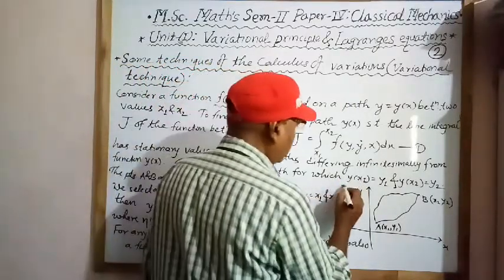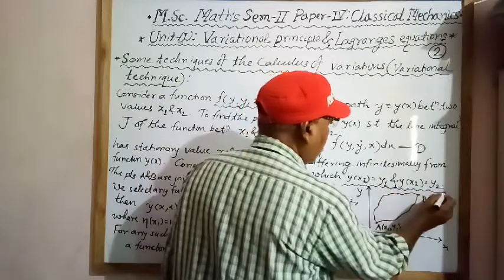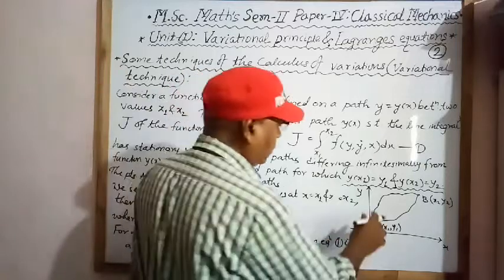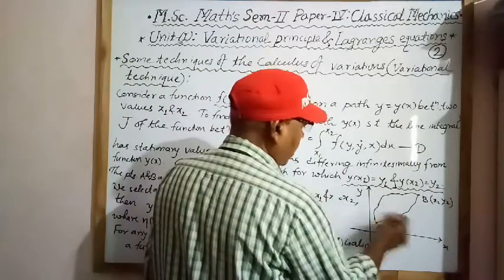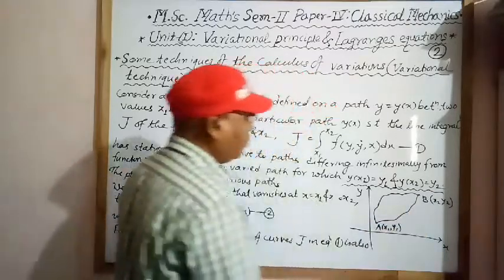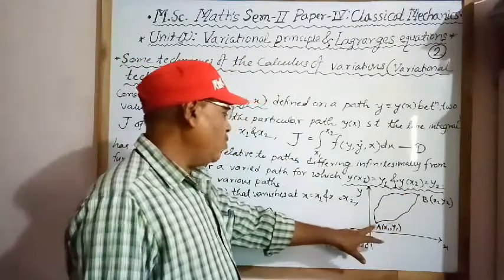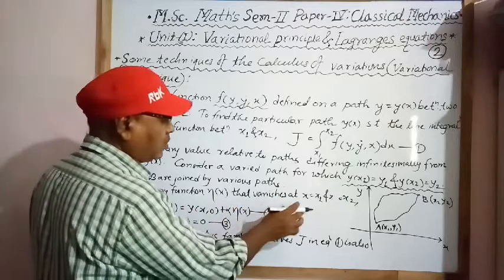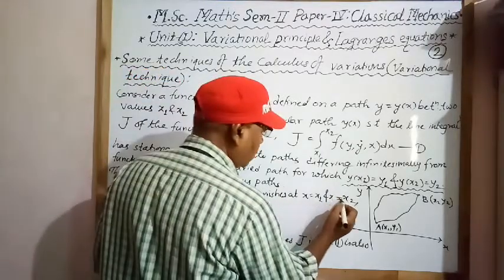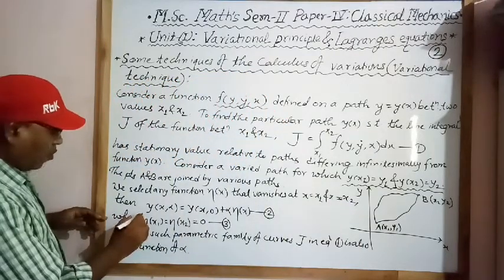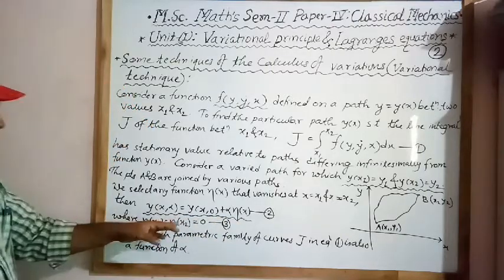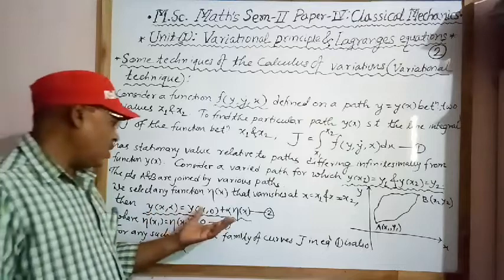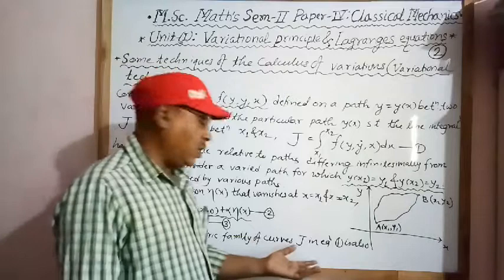We consider valid paths for which y(x1) = y1 and y(x2) = y2. The points A(x1, y1) and B(x2, y2) are joined by various paths — a lower path and an upper path as shown in the figure. We select any function η(x) that vanishes at x = x1 and x = x2, so that the varied path is given by y(x, α) = y₀(x) + α·η(x), where η(x1) = η(x2) = 0.